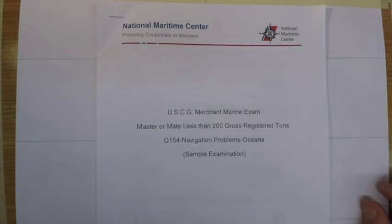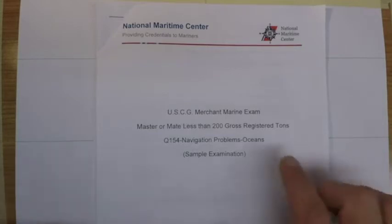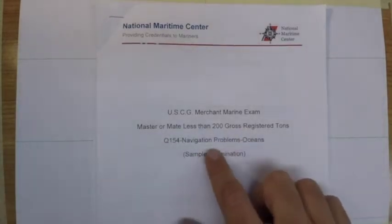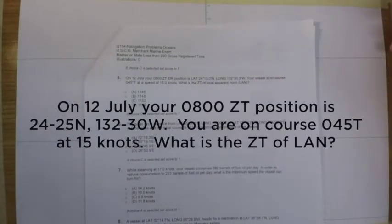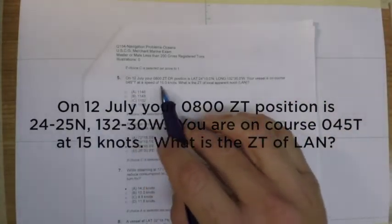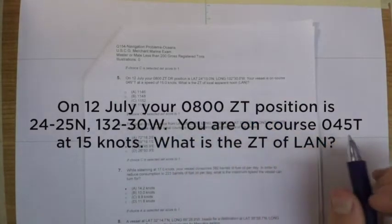Okay, welcome back to our series solving the 200 ton ocean's navigation problem sections from the National Maritime Center. We're moving on now to question five. Question five reads: on 12 July your 8 o'clock zone time position was latitude and longitude. Your vessel is on a course of 045 at a speed of 15 knots. What is the zone time of LAN?